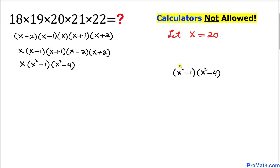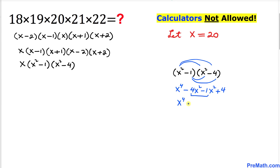Now let's go ahead and do the double distribution and multiply (x squared minus 1) times (x squared minus 4). This is going to become x to the power 4, minus 4x squared, minus x squared, plus 4. Combining like terms gives us x to the power 4 minus 5x squared plus 4. So we can write the full expression as x times (x⁴ minus 5x² plus 4).